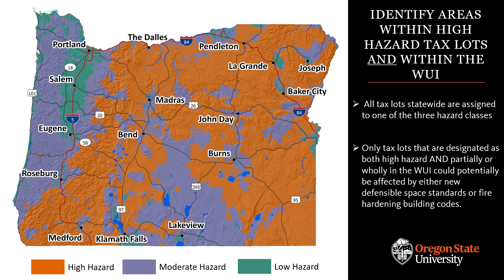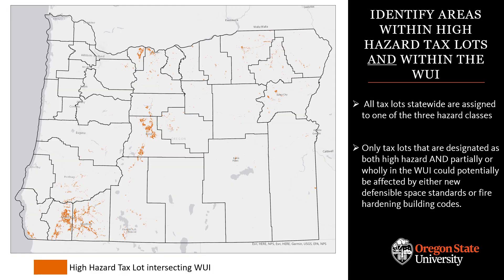The final wildfire hazard map available in the Oregon wildfire risk explorer includes a hazard classification for every tax lot in Oregon. However, only the tax lots that are both high hazard and in the wildland urban interface will be subject to new defensible space or fire hardening building codes. As required by legislation and rule, the maps will be reviewed and updated by Oregon State University and the Oregon Department of Forestry at least every five years.